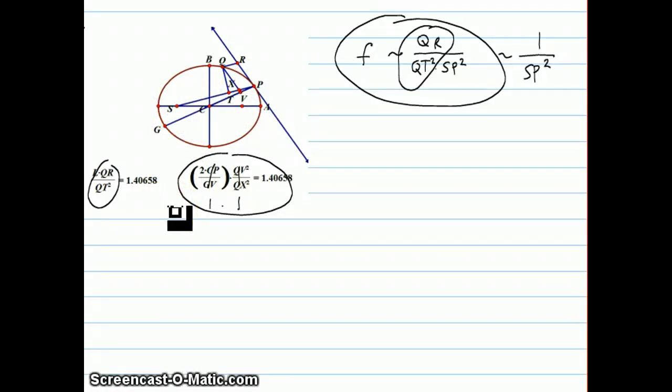Well, this theorem over here, that L times QR over QT squared always equals 2CP over GV times QV squared over QX squared, that's going to take another 40 minutes to be continued.